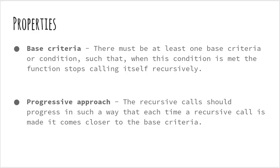This will illustrate a key property of recursive functions that recursive functions can go on infinitely like a loop. To avoid infinite running of recursive functions, there are two properties that a recursive function must have. One is a base criteria which some people also call an escape hatch. There must be at least one base criteria or condition such that when this condition is met, the function stops calling itself recursively. The other thing is that recursive calls should progress in such a way that each time a recursive call is made, it comes closer to the base criteria.